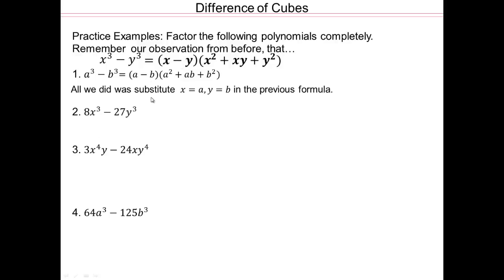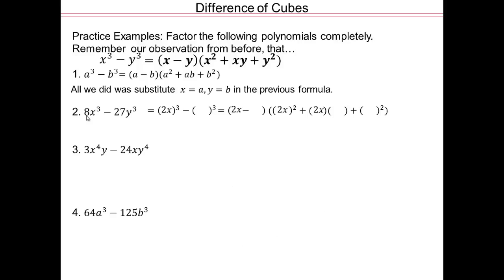Any time you have factoring, the first thing to do is see if you can factor out the greatest common factor. This is difference of cubes, so we're going to apply that formula — all you have to do is fill in the blanks. So 8x cubed: whose cube is 8x cubed? You're taking the cube root of 8x cubed, which is 2x. So 2x goes into each corresponding position. Then cube root of 27y cubed is 3y. So 3y fills in the remaining positions, and that is your final answer.